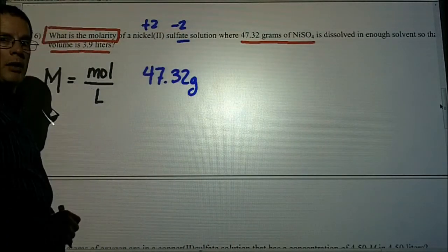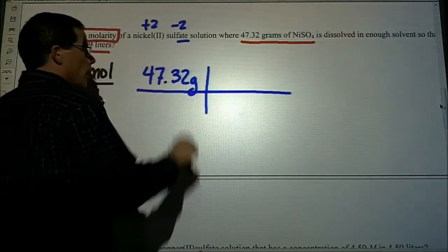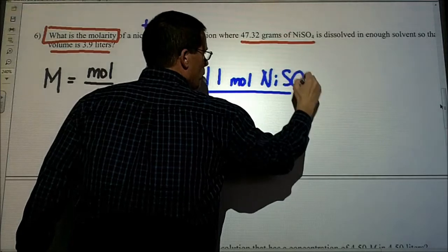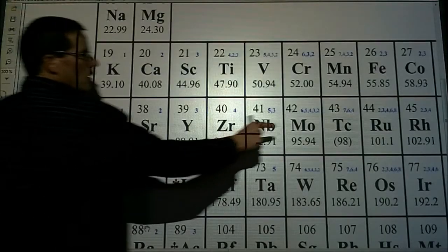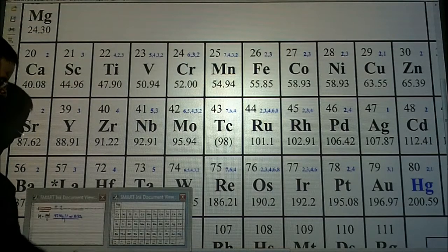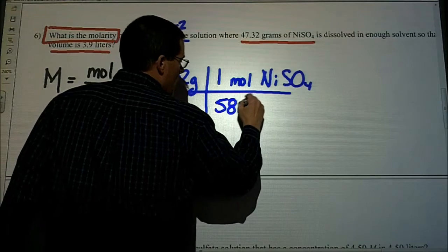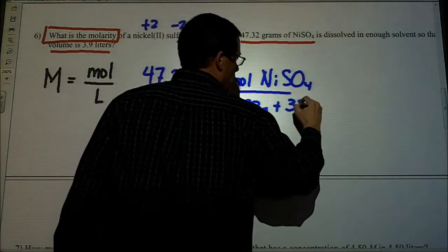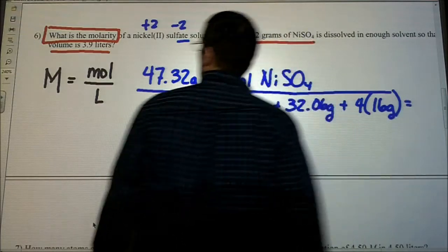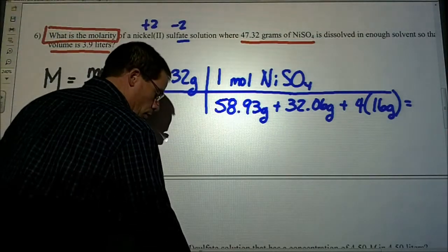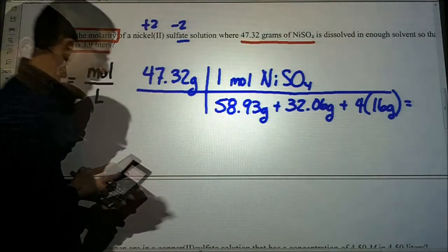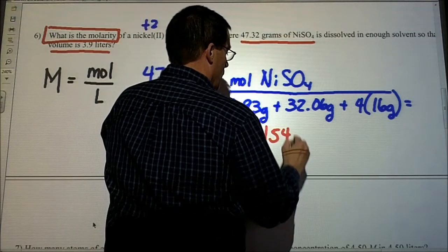We want to change the grams to moles because we're trying to get to moles. So one mole of nickel(II) sulfate. Nickel has a molar mass of 58.93 and we have one sulfur, which is 32.06, and we have four oxygens. We have to change the grams to moles. If you need to find out what the molar mass of nickel sulfate is, that's probably not a bad idea. The molar mass is 154.99.